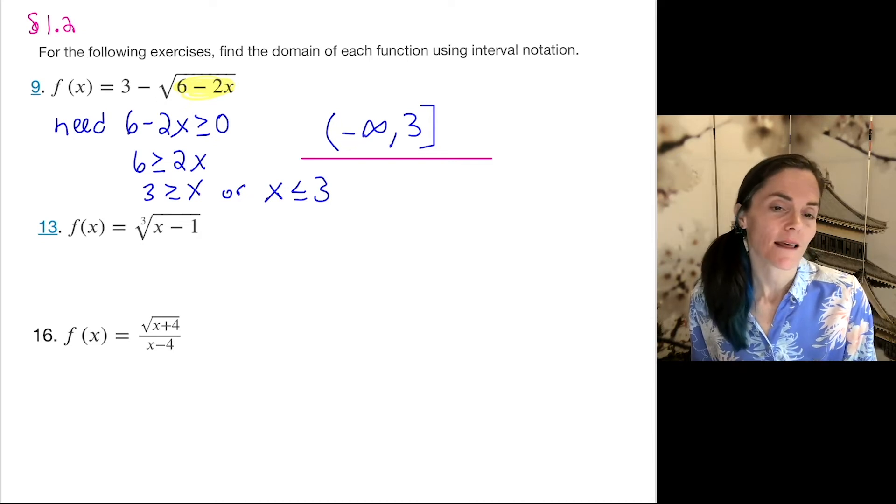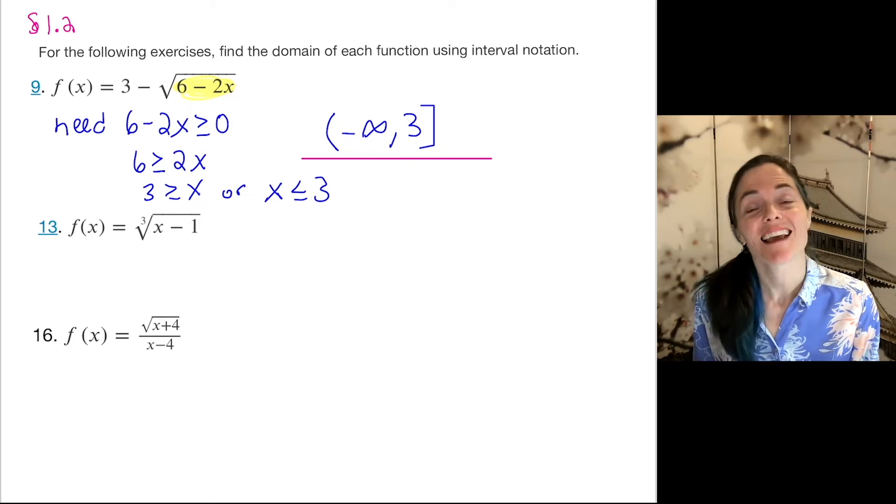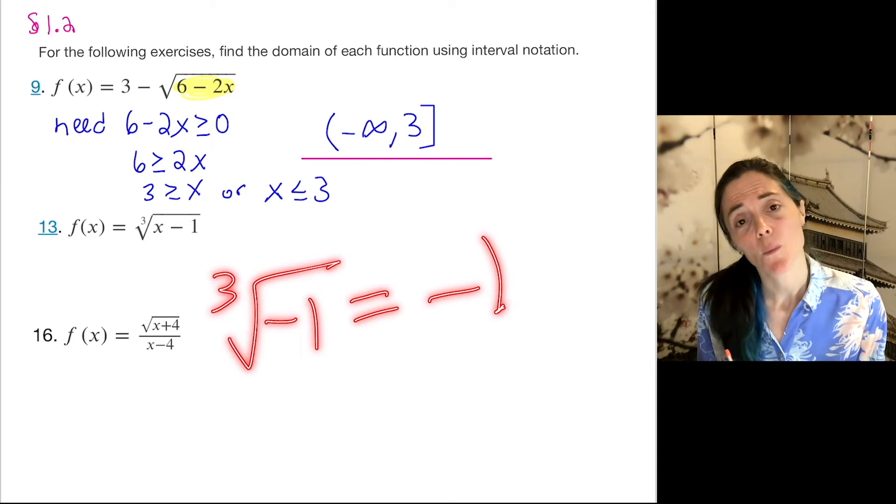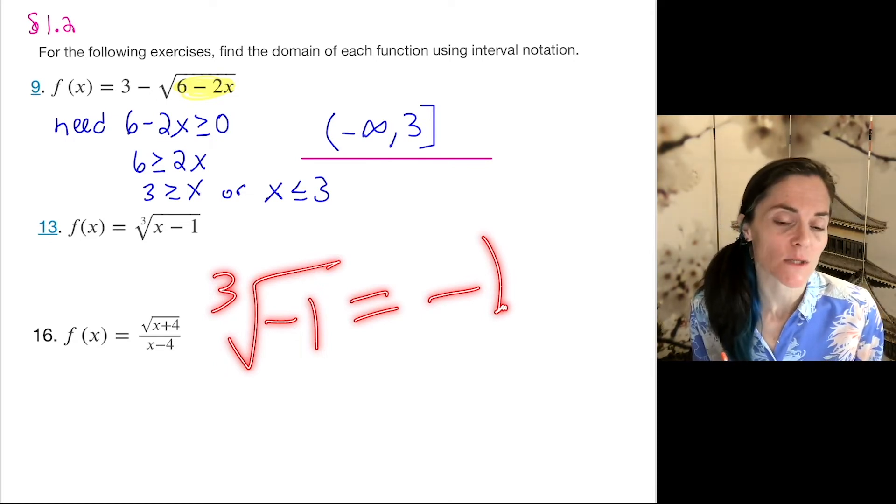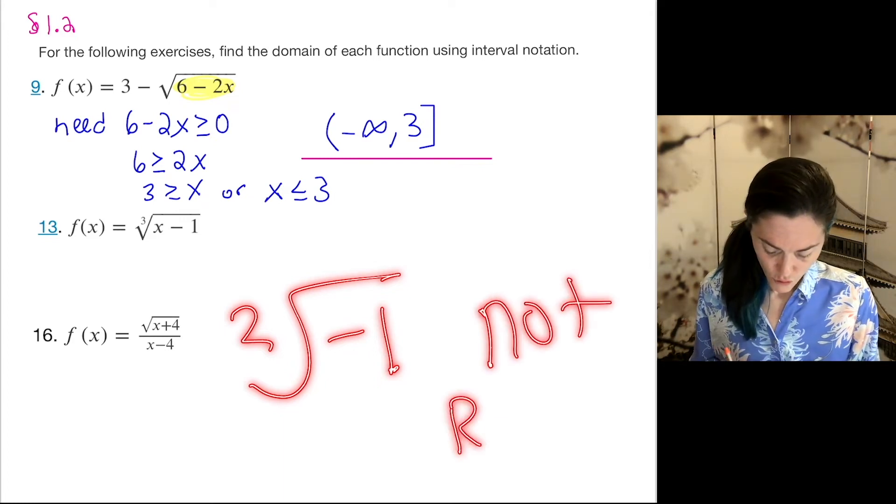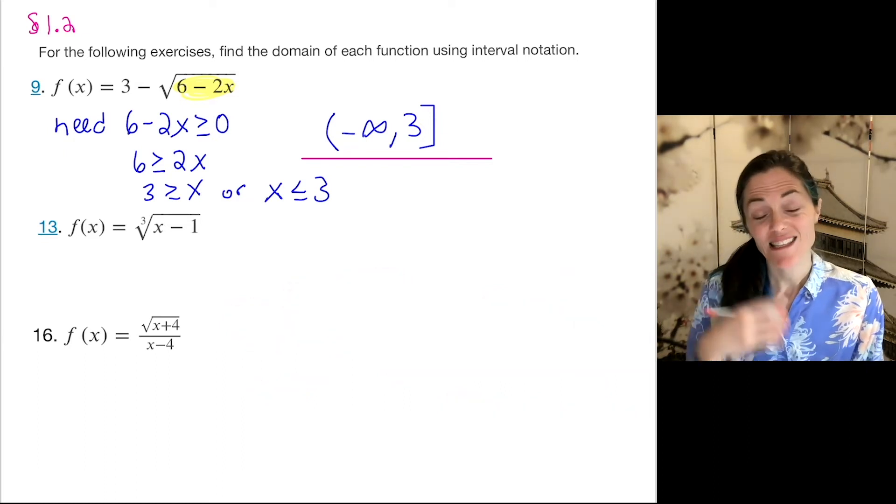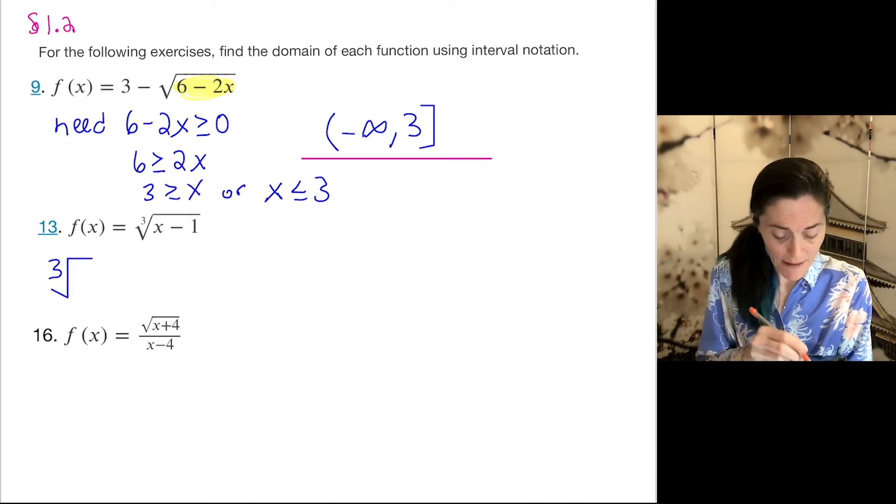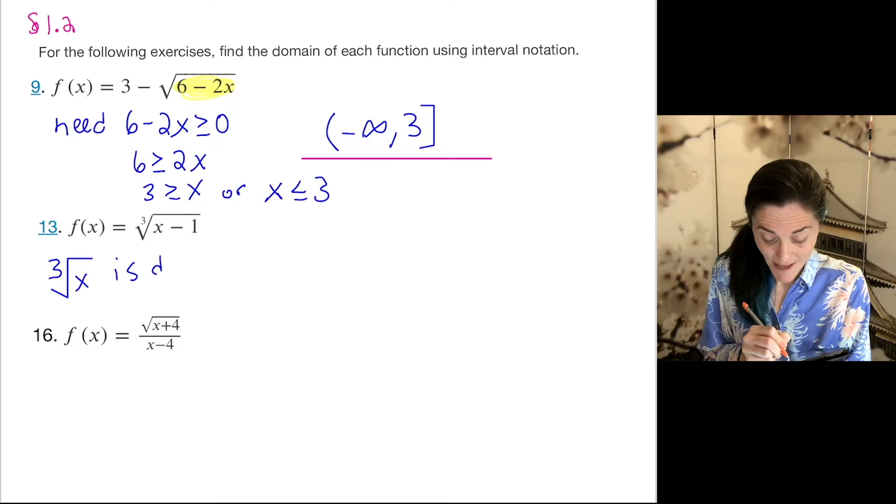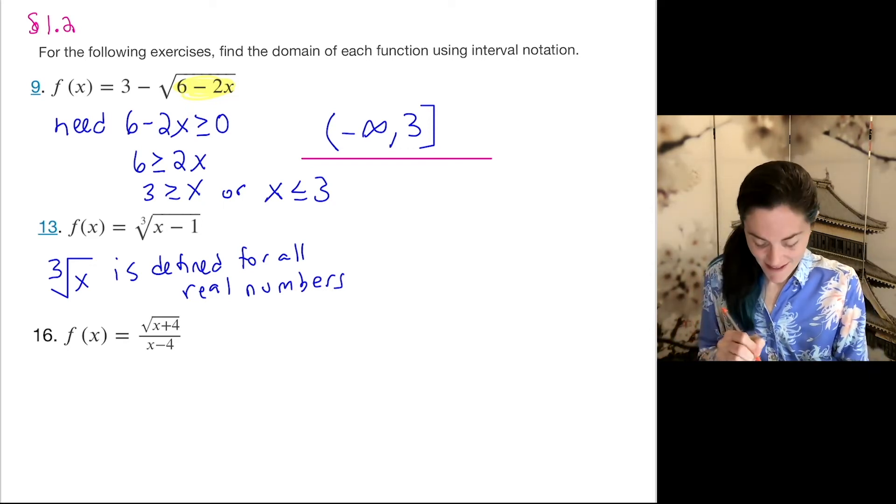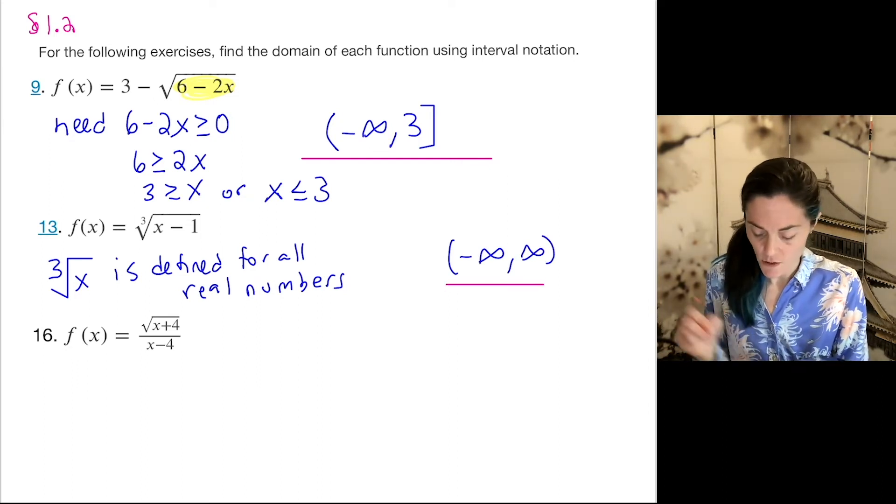But those are saying the same thing. Number 13, this is fundamentally different than number 9, even though we see a radical. Cube root and square root are very different when it comes to domains. The cube root of negative 1 is negative 1. Why is that true? Well, minus 1 cubed is minus 1. On the other hand, square root of negative 1, this is not a real number, does not exist. And that's what makes square root and cube root different when it comes to domains. So the cube root of x, maybe I'll put this as my comment before I write my domain, the cube root of x is defined on all real numbers. Now, in particular, if we have the cube root of x minus 1, this is also defined for all real numbers. And so its domain is minus infinity to infinity.